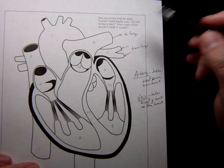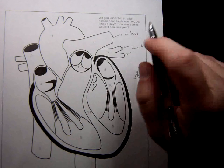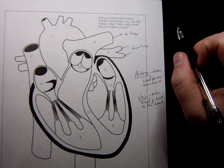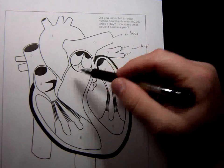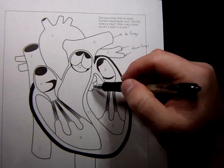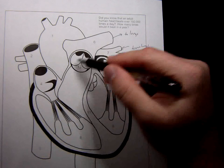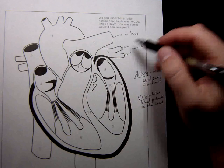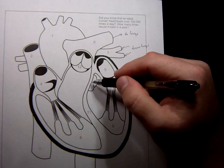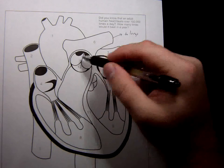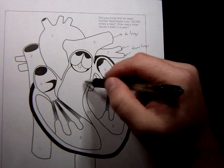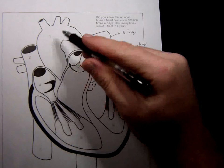The other two earned the name semilunar valve because of their description. Somebody looked at it. What's lunar mean? Moon. And what does semi mean? Half. So somebody looked at these valves and said, hey, these kind of look like half moon shapes. And so they named these the semilunar valve. So this is the pulmonary semilunar valve because it's going to the lungs. And this is the aortic semilunar valve because it's leading into the aorta.